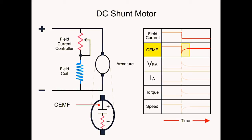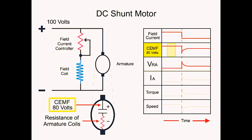This also causes a spike in the voltage drop across the resistance of the armature. Because the total applied voltage is across the armature, any change in the drop across one part of the armature, either the CEMF or the voltage drop across the resistance of the armature coils VRA, will be made up by an increase in the drop across the other component. Thus, if there is 100 volts applied and the CEMF is 80 volts, the drop across the resistance of the armature coils will be 20 volts.